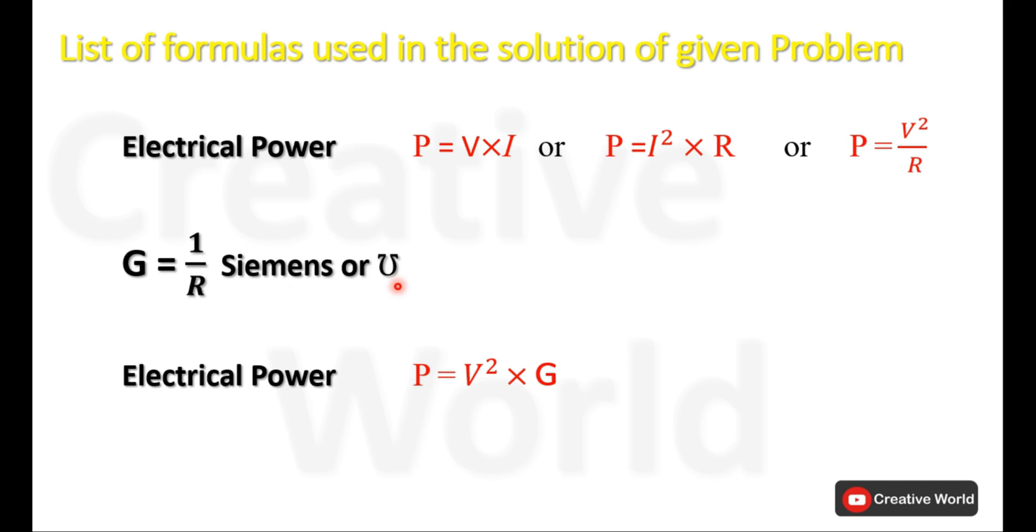It is opposite to the Omega symbol. Place the value of conductance in this formula by replacing 1 over R with G. So we will get this formula of power which includes G instead of resistance R. Here G is the conductance.